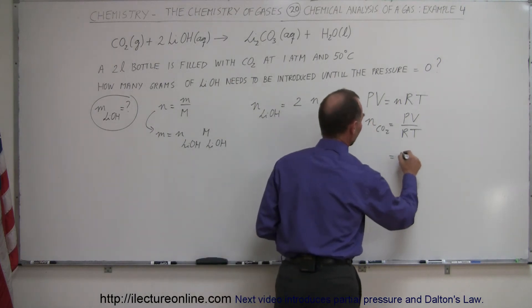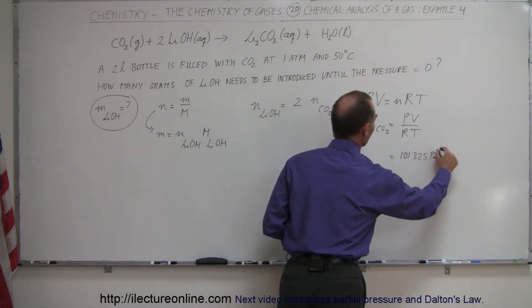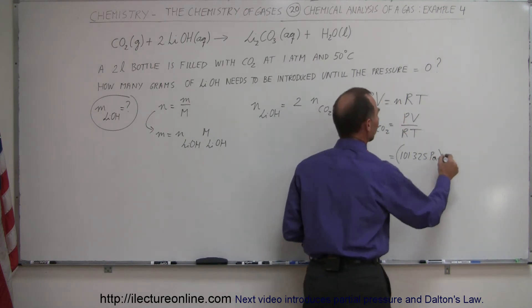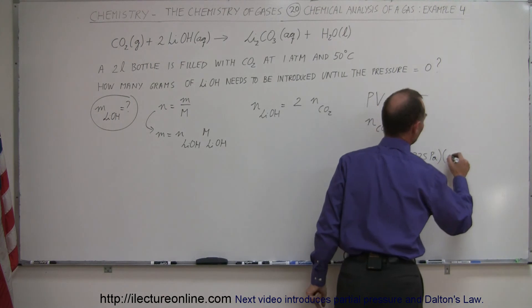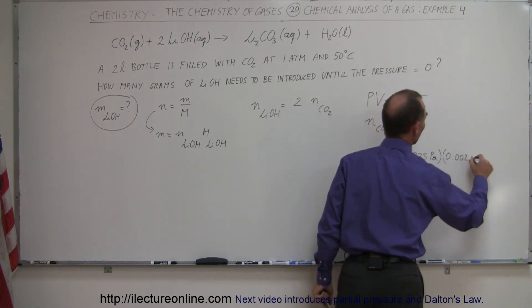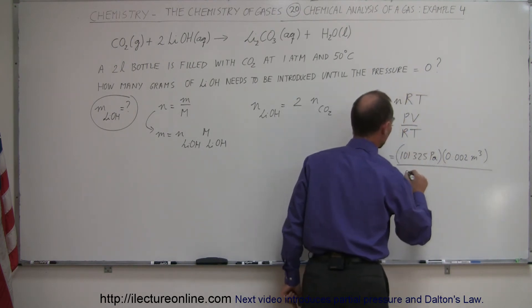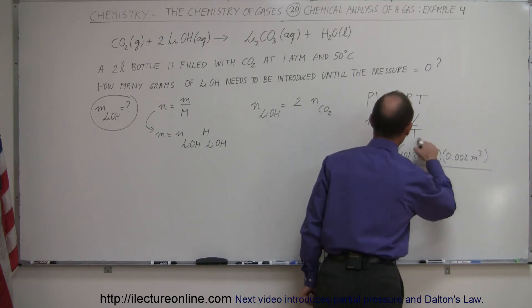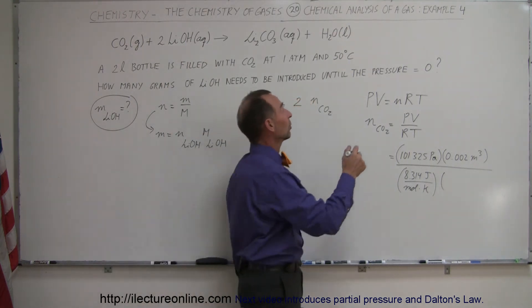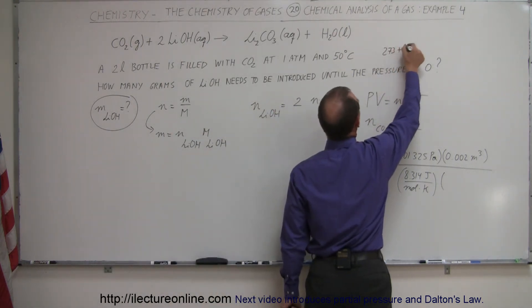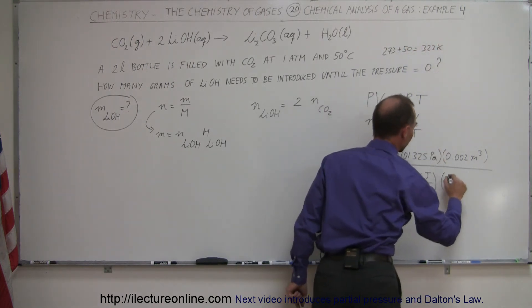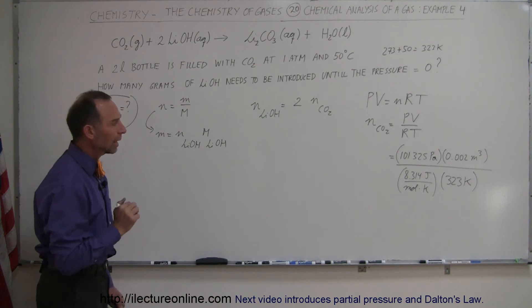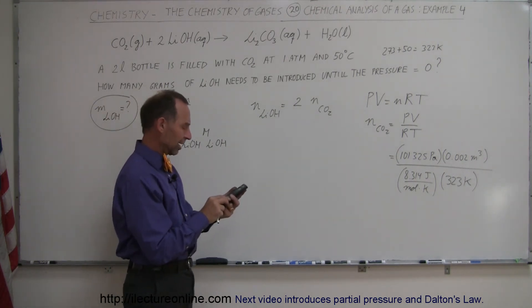Plugging in the values: pressure is 101,325 pascals — that's the standard unit in pascals or newtons per square meter. The volume, given in liters, we convert to 0.002 cubic meters. Divide by R = 8.314 joules per mole·Kelvin. The temperature is 50 degrees centigrade, so we add 273 to get 323 Kelvin. Now we have everything we need to find the number of moles of carbon dioxide.